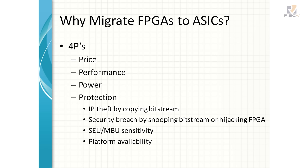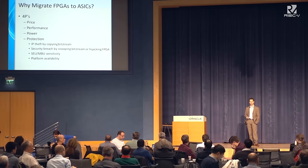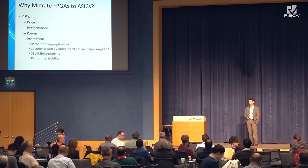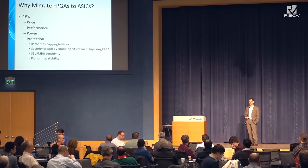The last two Ps are protection and platform availability. Protection covers IP theft, security breach, and event upsets — we have customers in the avionics industry very concerned about single event and multiple bit event upsets in FPGAs. Platform availability is also a concern: there's been large shake-up in the FPGA landscape, and customers are worried about the outcome of all the acquisitions. There are also customers with existing ASICs going obsolete, and we assist those in migration as well.